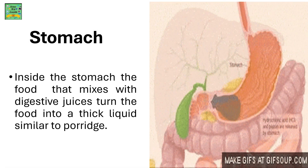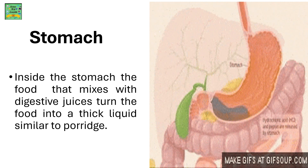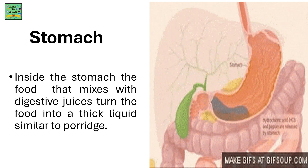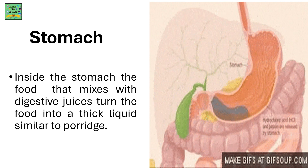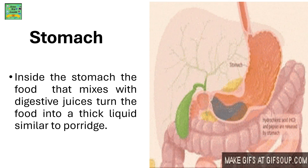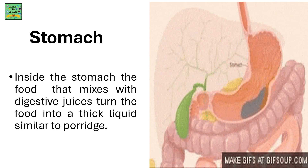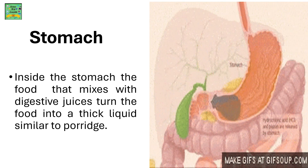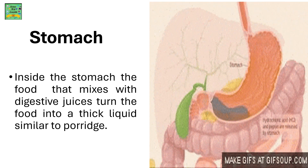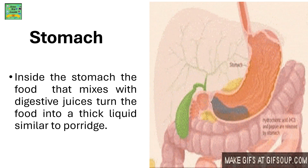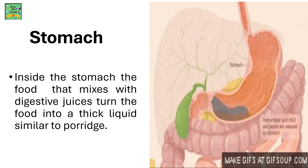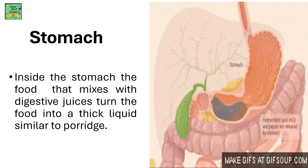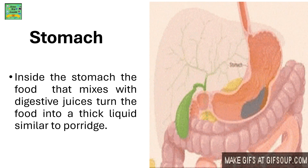Stomach. Inside the stomach, the food mixes with digestive juices, which turn the food into a thick liquid similar to porridge. These digestive juices are secreted or released by the stomach.